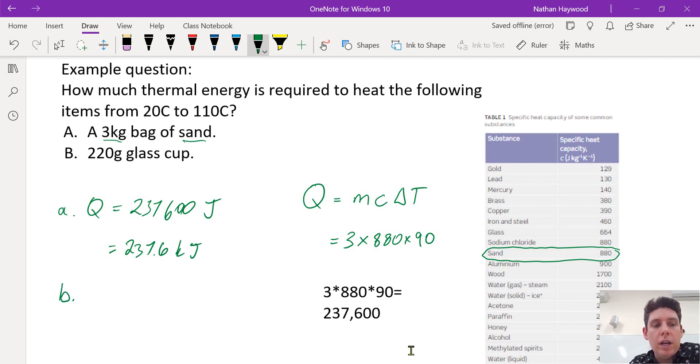So we could write that as kilojoules dividing by a thousand. All right, b. We have a 220 gram glass cup. Similar to the last example, except this time we need it in kilograms. So we're dividing by a thousand. So it converts the grams to kilograms. And then we want glass, which is over here.